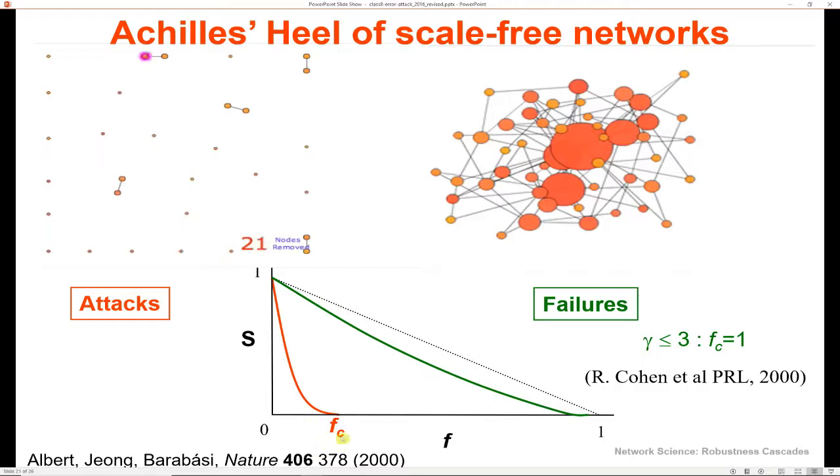And we bring back this threshold that we saw in percolation theory. And what we find is that, again, we have a finite number of hubs that we need to remove. And then we will have a fragmented network. The likelihood of this happening after the removal of one hub isn't that large. But as we start to continue to remove hubs from the network, this is the result that we see.